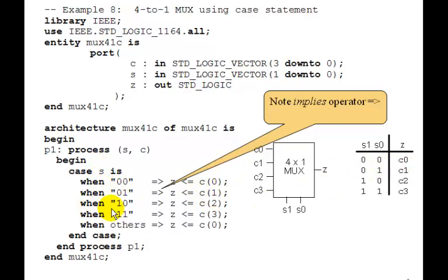When S is 1,0, then Z gets assigned C2. And when 1,1, when S is 1,1, then Z gets assigned C3. So basically, we're just copying this truth table into this case statement.